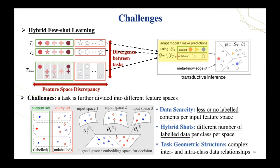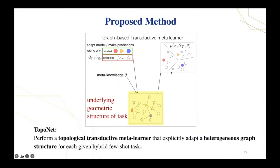In order to solve these problems, we propose a topological transductive meta-learner. The main idea is to explicitly model a structure which connects all the samples in the given task to represent the underlying geometric structure of hybrid few-shot task.